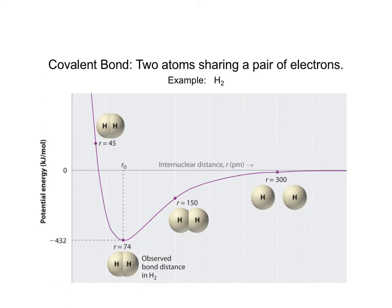To understand covalent bonding, this well-known diagram is called the potential energy diagram. For hydrogen, you have two atoms coming together to make the molecule. If they get too close, there's repulsion of the nuclei. This is potential energy versus the reaction coordinate, where you're looking at the molecules changing in time.